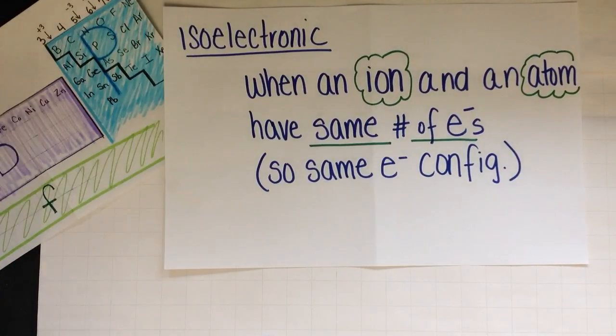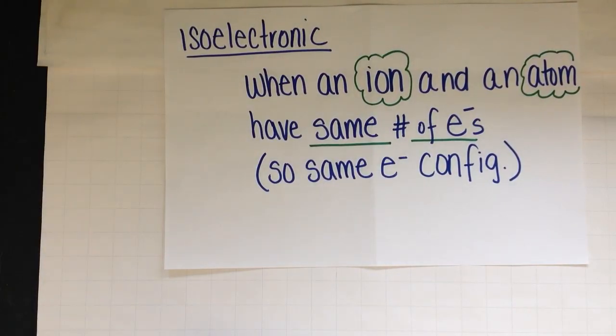Lastly, we're going to introduce this vocabulary word: isoelectronic. Isoelectronic is when an ion and an atom have the same number of electrons, so therefore they have the same electron configuration.